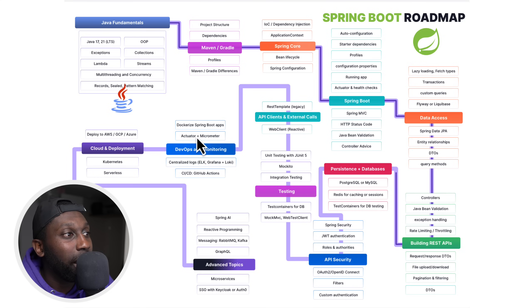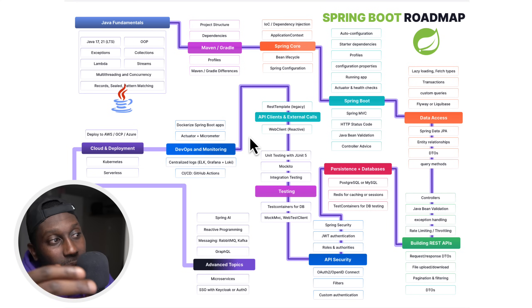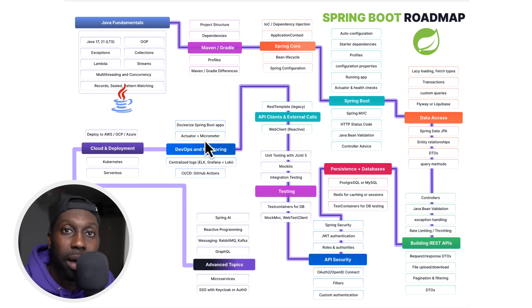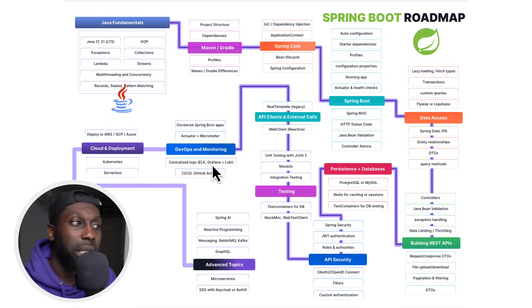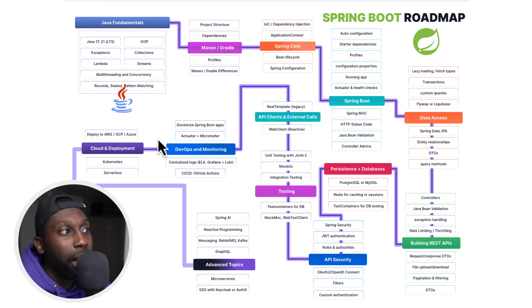As you follow through, DevOps and monitoring: how do you Dockerize your applications? Typically you don't just deploy the JAR file anymore — nowadays we have Docker, so you learn how to Dockerize Spring applications. Then Actuator and Micrometer allow you to monitor and expose metrics from your application. And then centralized logs — understanding the ELK stack, Grafana, Loki — and CI/CD with GitHub Actions: how do you automate deployment, continuous integration, and continuous deployment?